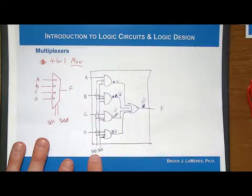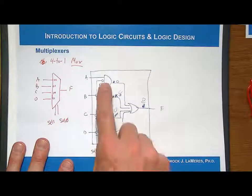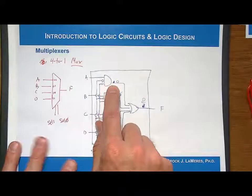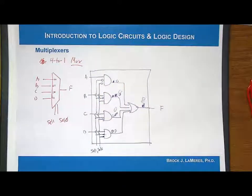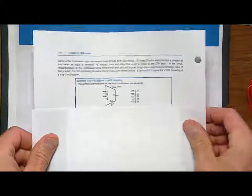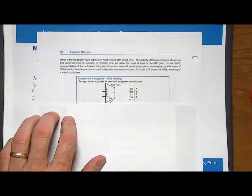This was a sum of products, and we used inverters on the select lines to either pass or block a variable. If you think about the truth table for that, it really looks like this. Let's look at it in terms of the truth table and zoom in on this.